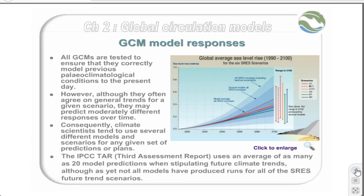Once again, we can see that the A1FI, or high-intensity fossil fuel usage scenario, tends to give the highest outputs — or in this case, give the highest sea level rise. Much uncertainty involves the quantity of land ice that will be added to the ocean, and to the most extent, this model only involves thermal expansion of the oceans.